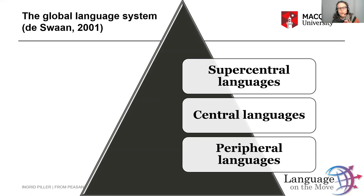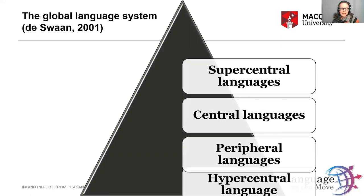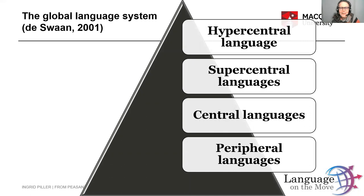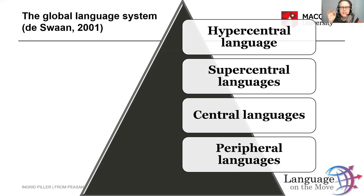And above all these languages sits yet another layer — note the singular here — made up of one single language. Whereas we have plural for all the peripheral, central, and super central languages, the hyper central language of globalization is said to be English. English sits at the very top of the pyramid as a language that is used across the globe and in all kinds of functions and domains.